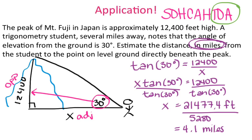So this student is standing approximately 4.1 miles from a point on level ground directly beneath the peak. That concludes all of your notes for section 4.3 right triangle trig.